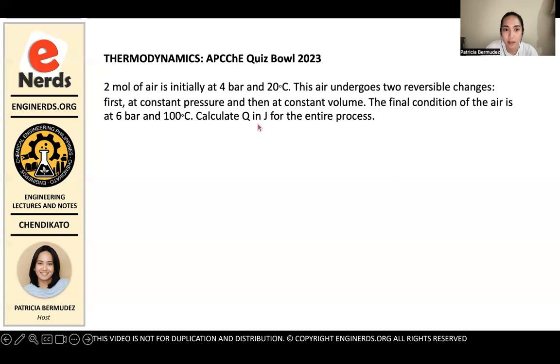For today's video we will be discussing a problem that appeared at this year's Chemical Engineering Quiz Bowl that was held last September at SMX. It is under the category thermodynamics and the problem states that 2 mole of air is initially at 4 bar and 20 degrees celsius. This air undergoes two reversible changes first at constant pressure and then at constant volume. The final condition of the air is at 6 bar and 100 degrees celsius. Calculate q which is the heat in joules for the entire process.